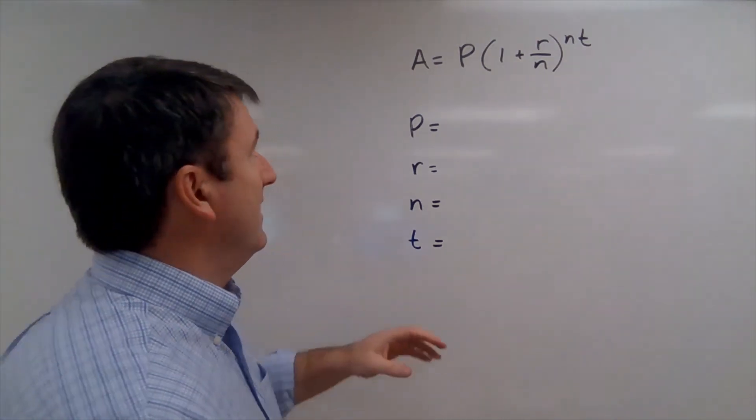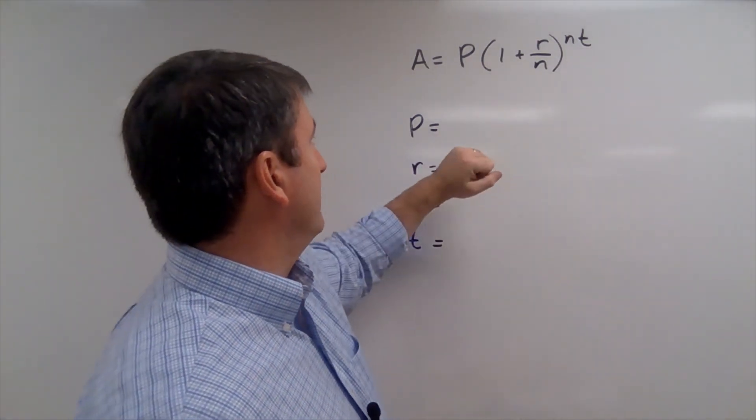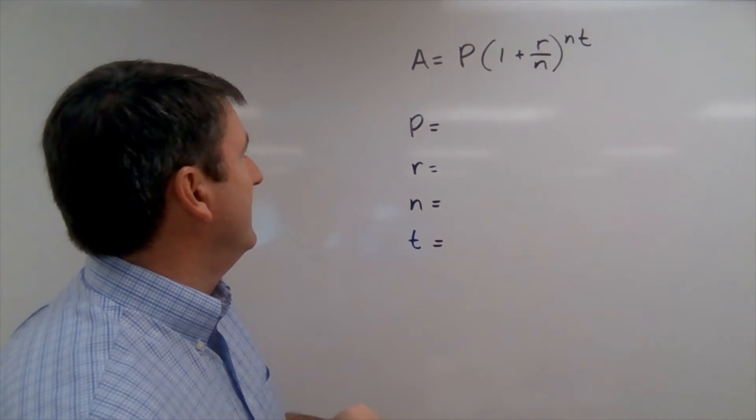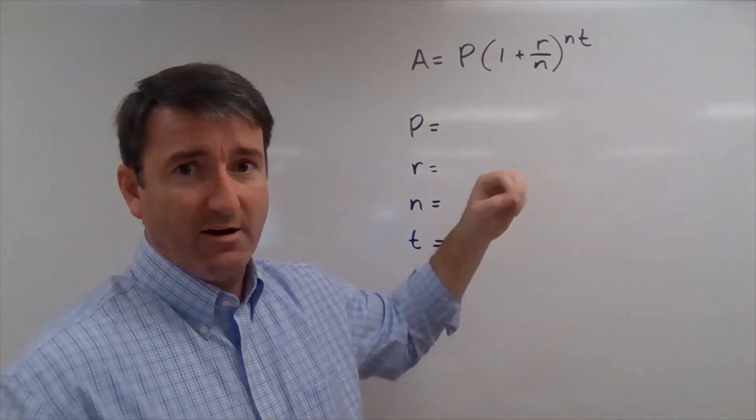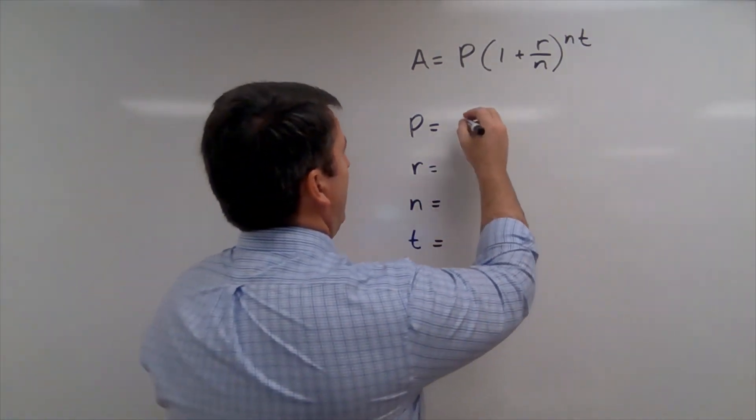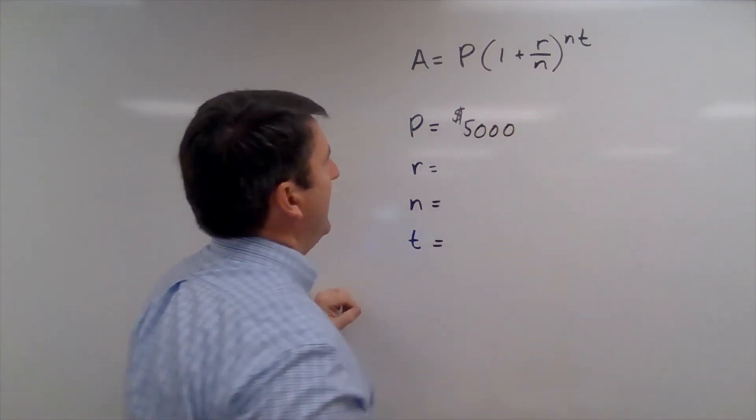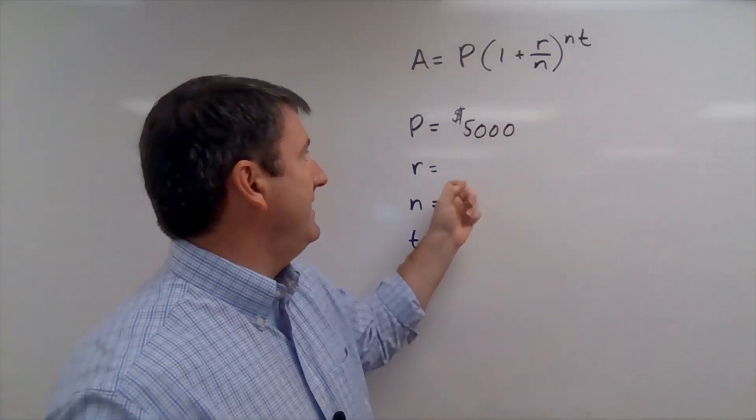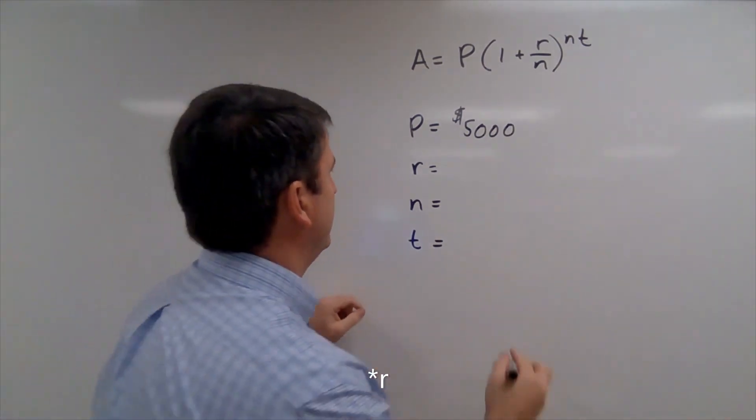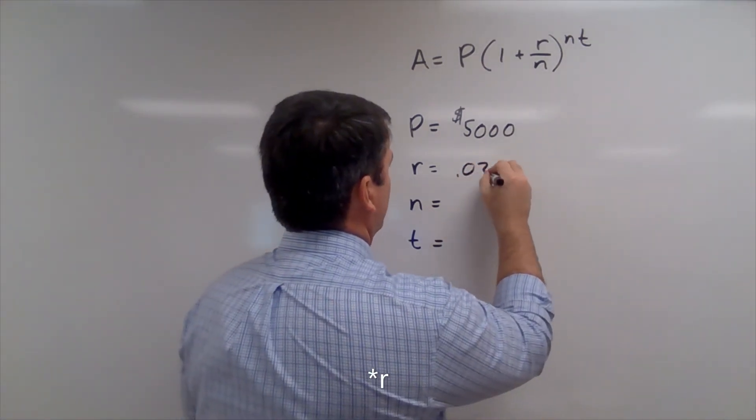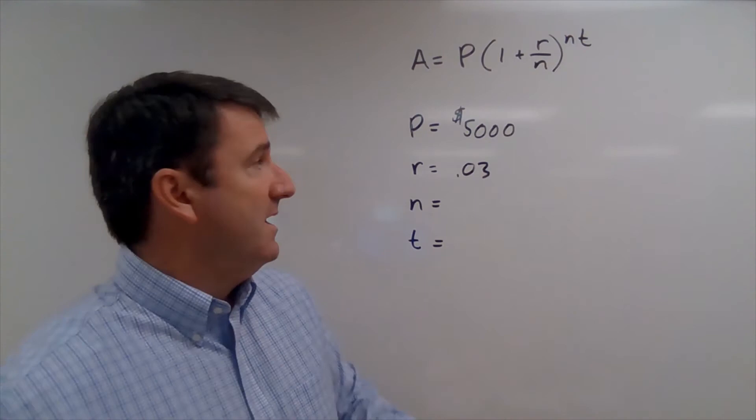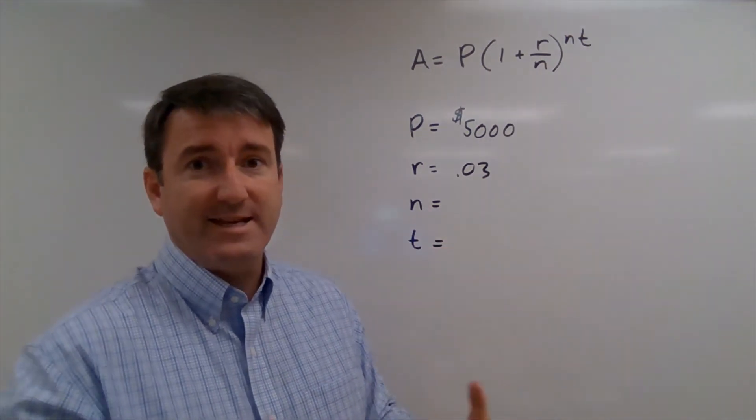All right, so let's start with our compound interest formula. And so in this case, our P, our starting principal, is $5,000. And the R, the annual percentage rate, is 0.03. We're told that it's 3%, but remember, we need to put this as a decimal.